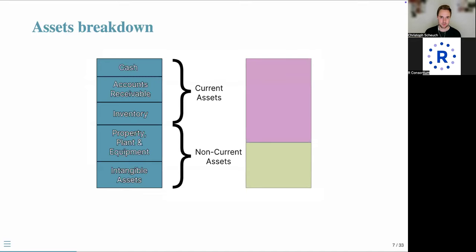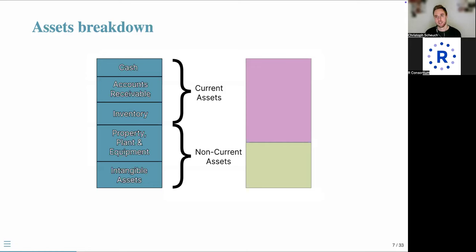Assets have two main blocks: current assets and non-current assets. Current assets are expected to be converted into cash or used up within one year, including cash, accounts receivable — money owed to a business for goods or services — and inventory. Non-current assets are long-term investments, particularly property, plant and equipment, which are not expected to be liquidated short-term. Non-current assets also include intangible assets such as patents, brands, trademarks, or copyrights.